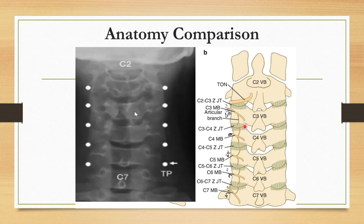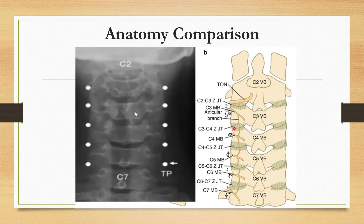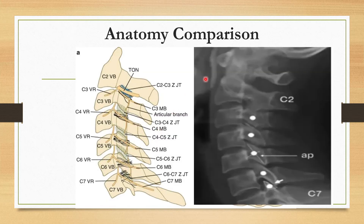You can see the medial branch lies at the waist. This is a diagrammatic picture and this is an x-ray picture showing the same. So in an AP (epi) view, our target is the waist of the facet.